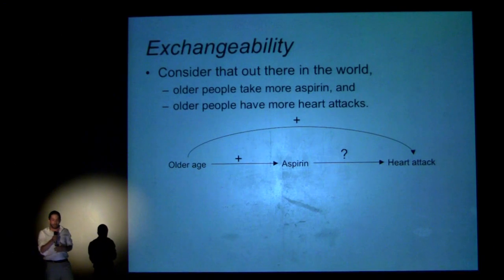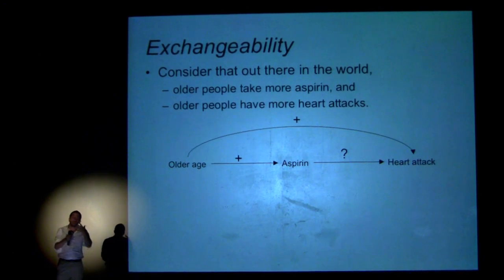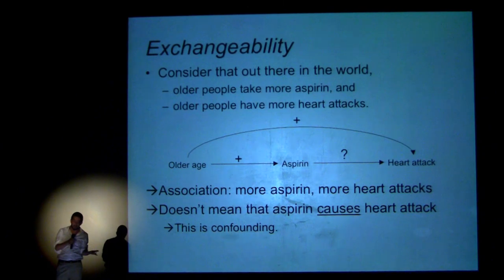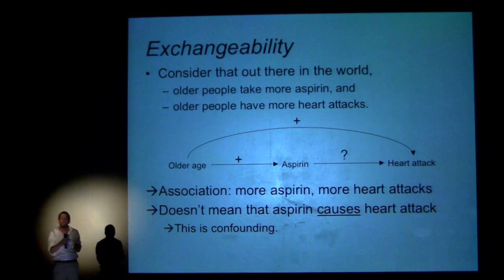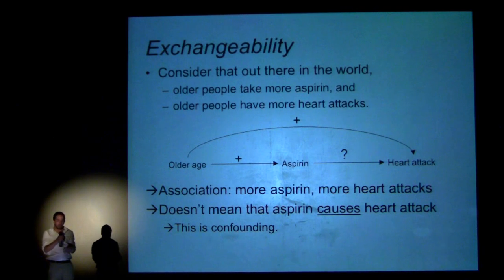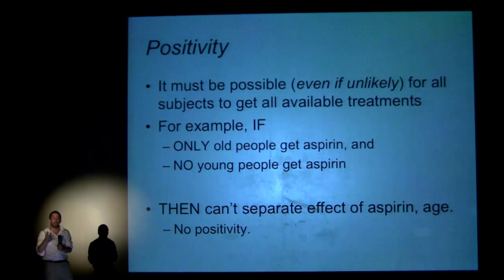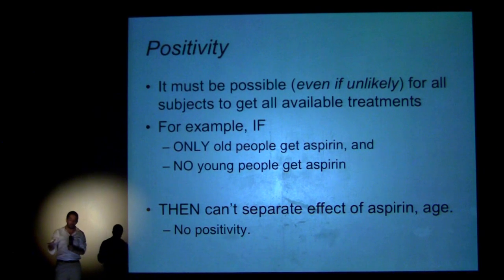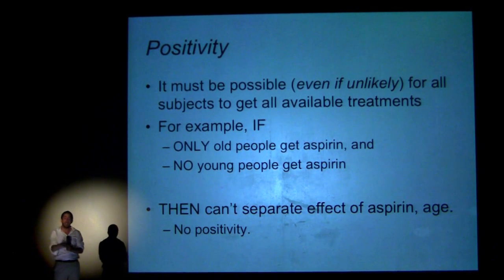Exchangeability: older people take more aspirin out there in the world, and older people have more heart attacks. So there is an association between taking aspirin and having heart attacks. If you're not careful, you could confuse that association with the idea that taking aspirin causes heart attacks — of course that's not true, it's probably just the opposite. This is the problem of confounding, and it's what we're usually dealing with when we say correlation is not causation. The last condition, positivity, means it's got to be possible, even if unlikely, for all subjects to get all possible treatments. If only old people get aspirin and no young people do, we can't separate the effects of aspirin and age — we don't have positivity.